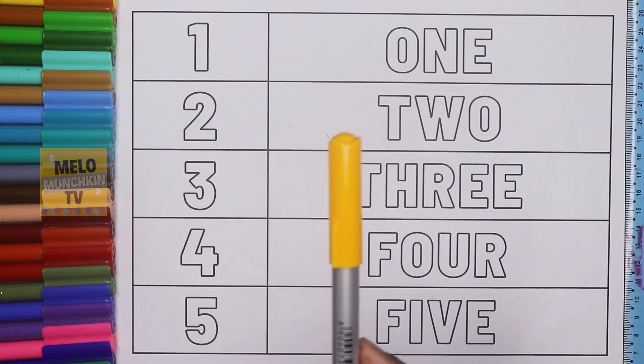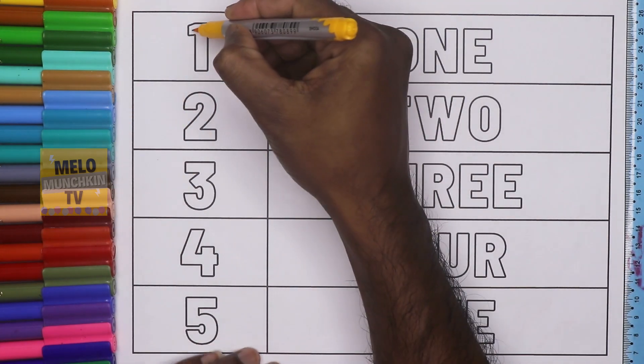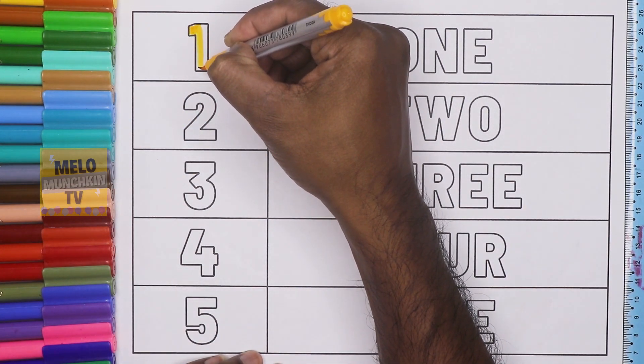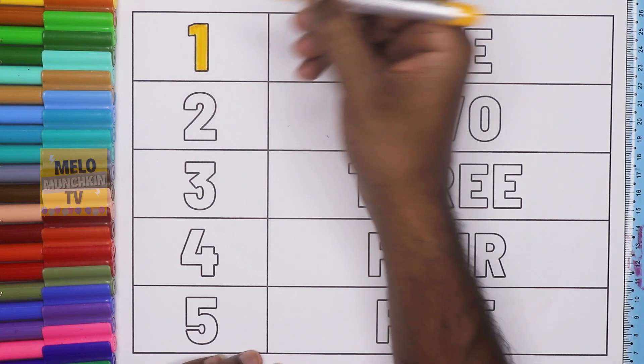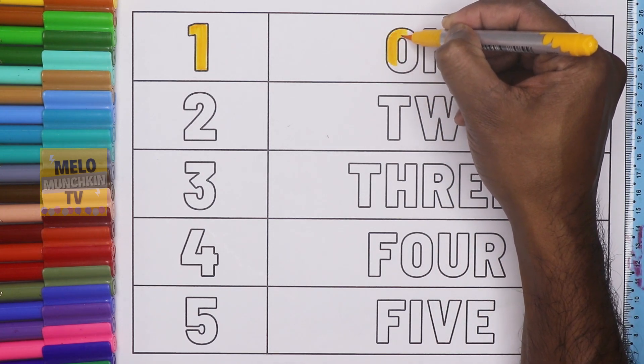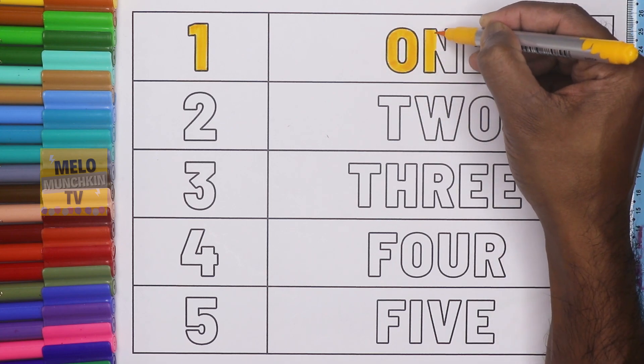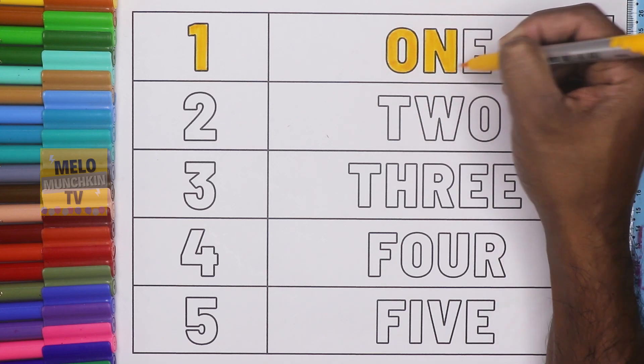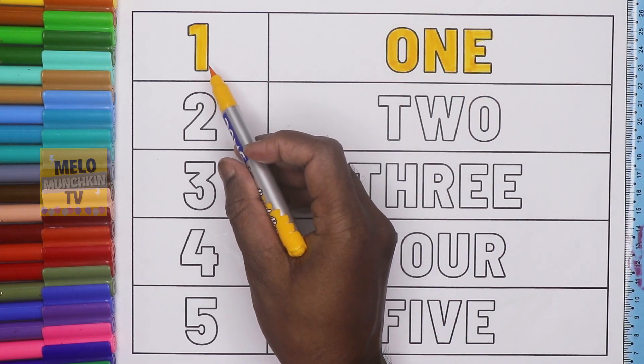First I'll take yellow color to color number 1. So this is 1 and the spelling is O-N-E, one. Let's color this also. So this is O-N-E, 1. This is 1, O-N-E, 1.